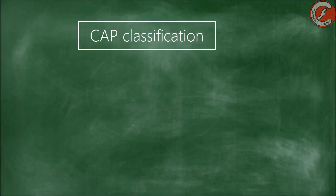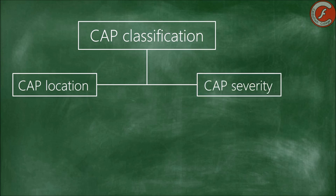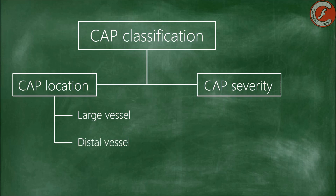Thus, coronary perforations can be classified according to the location or the severity of the complication. In this way, coronary perforations can occur in main or large vessels, in distal beds, or in branches of collateral circulation, both septal and epicardial — all this having prognostic and therapeutic implications.